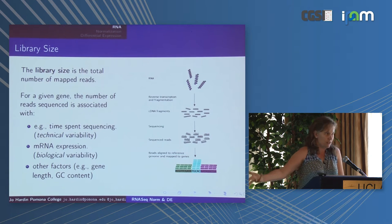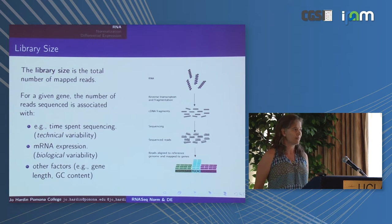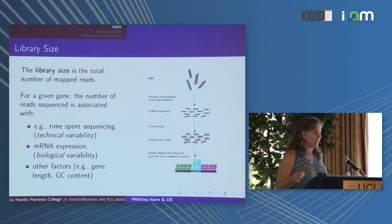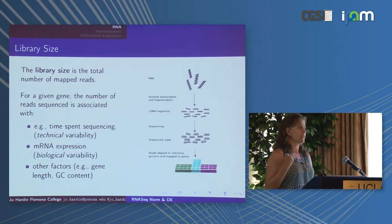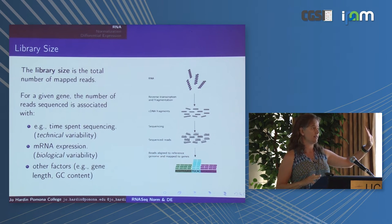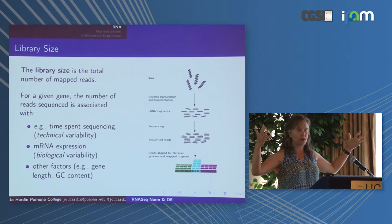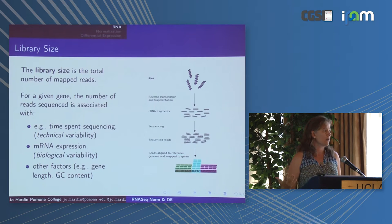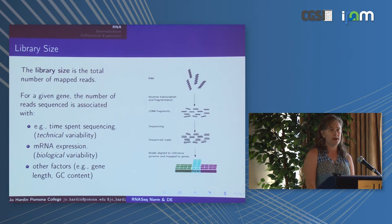We're interested in biological variability — whether mRNA expression is actually higher in a sample. There are other factors like gene length and GC content, but we won't deal with those today because in differential expression we're comparing gene i in sample A to gene i in sample B. Gene i has a particular length, so if we're comparing across samples, gene length and GC content aren't relevant here, though they may matter for other analyses like PCA or clustering.